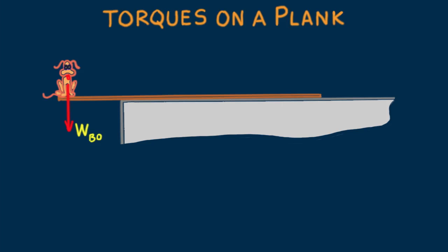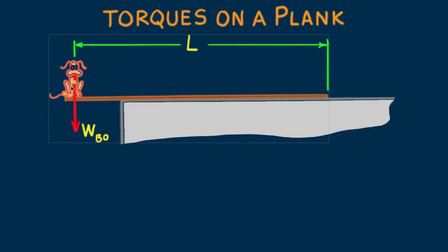Bo has weight W sub Bo and the length of the plank is L. If the plank and Bo overhang too much, Bo is in trouble.